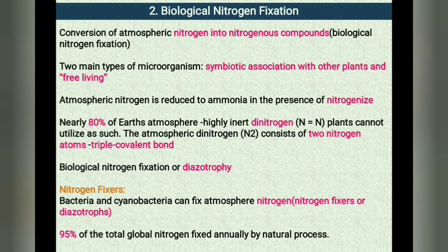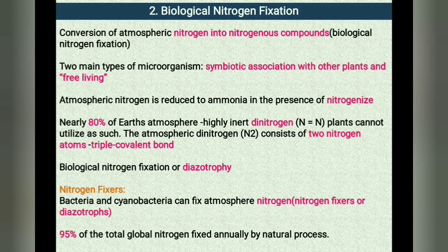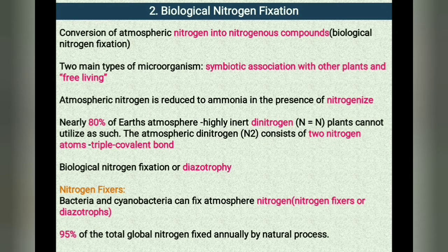Biological nitrogen fixation is a process whereby atmospheric nitrogen is reduced to ammonia in the presence of nitrogenase. Nitrogenase is a biological catalyst found naturally only in certain microorganisms like symbiotic Rhizobium and Frankia, and free-living organisms like Azospirillum, Azotobacter and blue-green algae. Nearly 80% of earth's atmosphere contains nitrogen in the form of highly inert dinitrogen (N2), which consists of two nitrogen atoms linked by a triple covalent bond. The reduction of inert gaseous dinitrogen into ammonia (NH3) through the agency of some microorganisms is called biological nitrogen fixation, or diazotrophy.